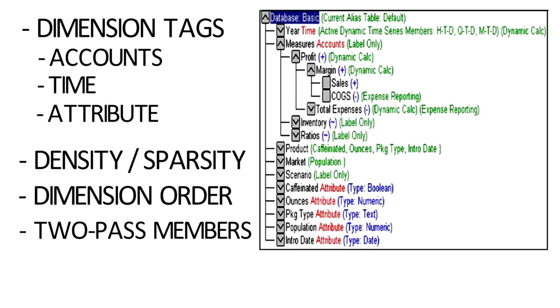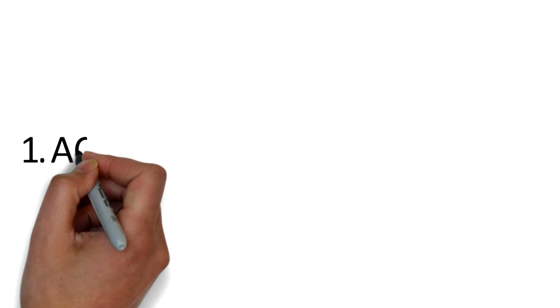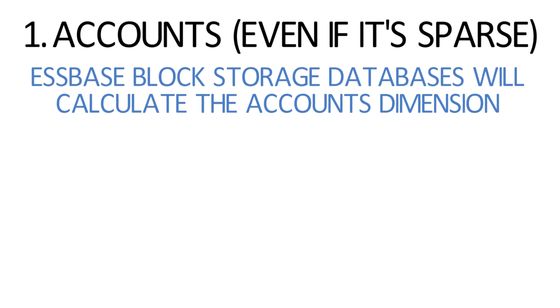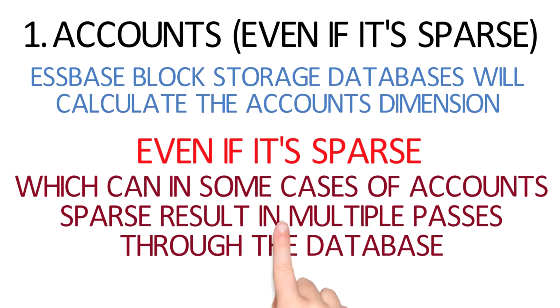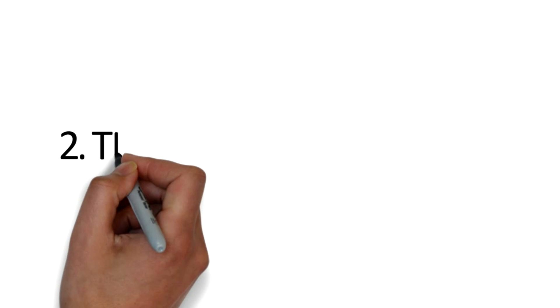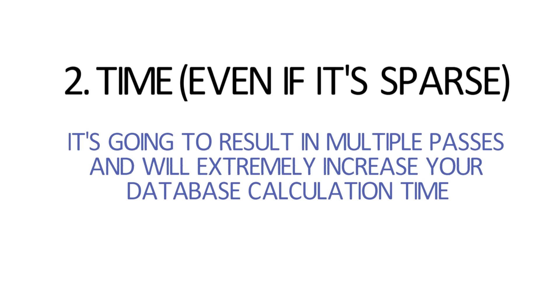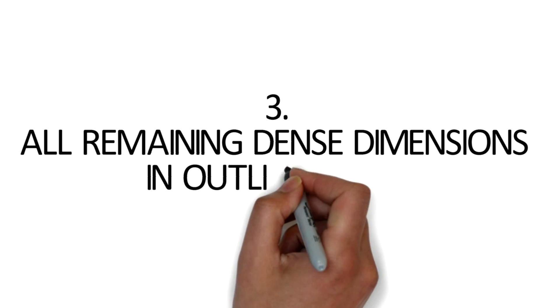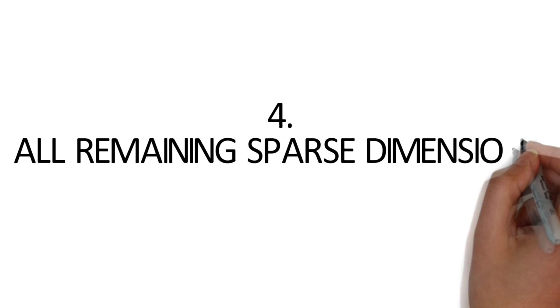Based on those dimension tags, density and sparsity, and calculation order, when you run a default calculation the first dimension the database will calculate is the Accounts dimension. It's important to remember that S-Base block storage databases will calculate the Accounts dimension first, even if it's sparse, which can in some cases result in multiple passes through the database. Be very careful if Accounts is sparse or if Time is a sparse dimension, because you will quite often result in multiple passes and extreme elongation of your database calculation time. After that, it will do all the dense dimensions in the order they're in the outline, then all the sparse dimensions in the order they're in the outline.